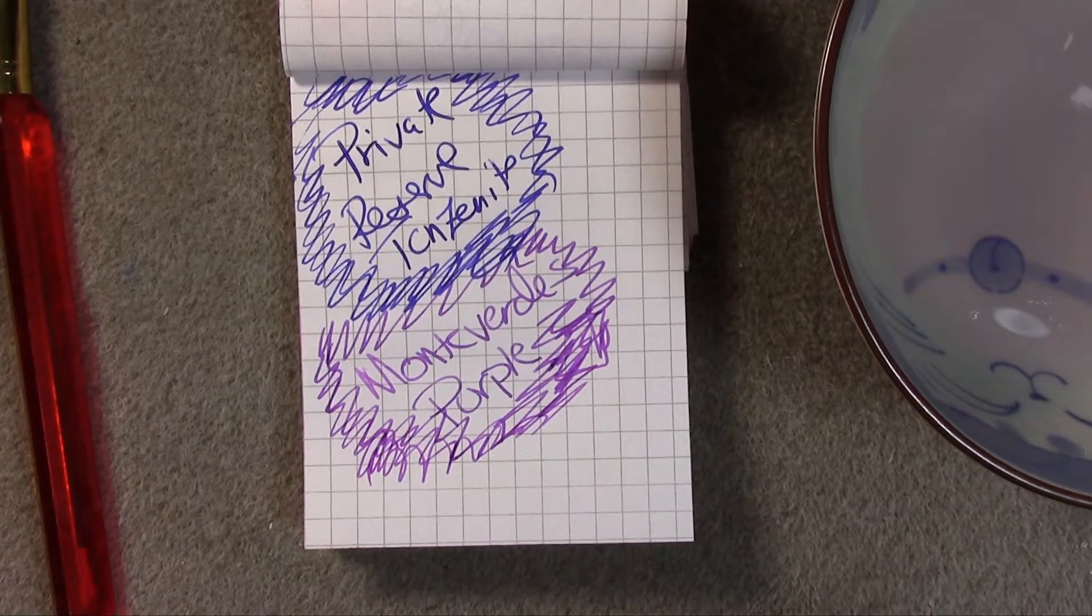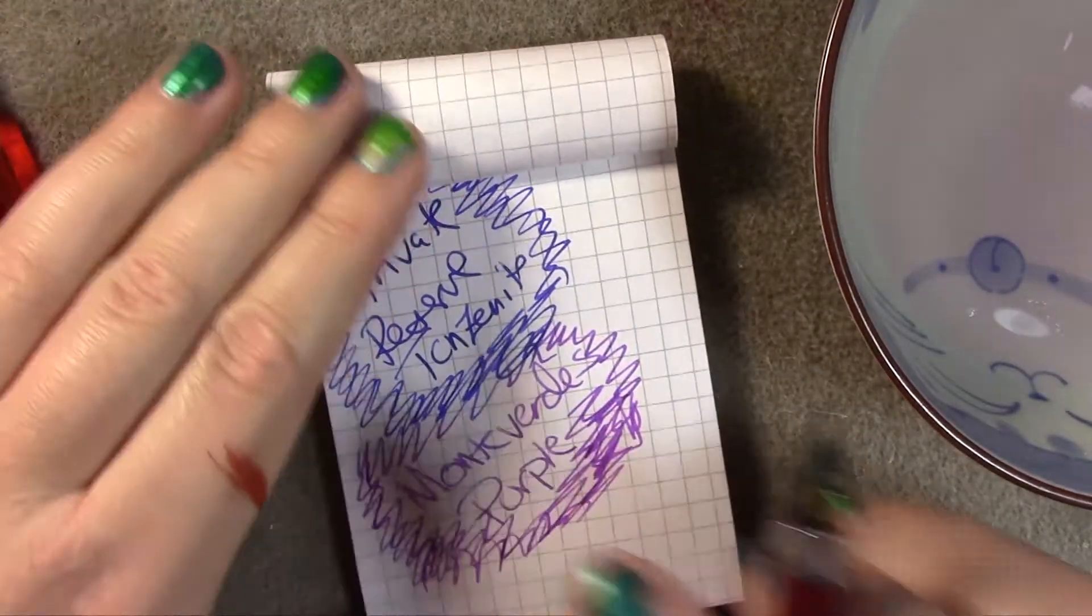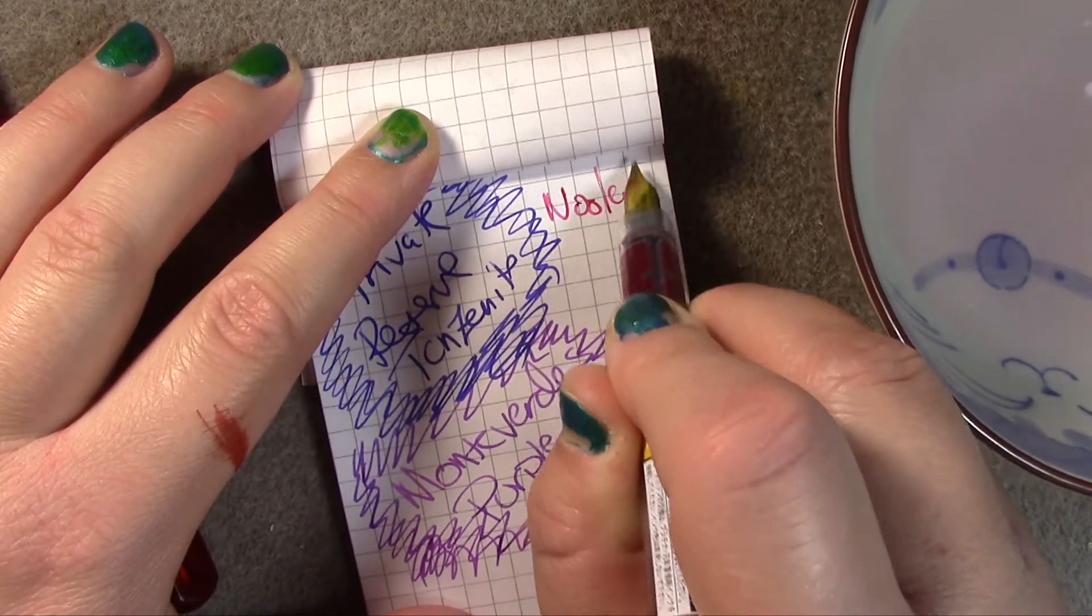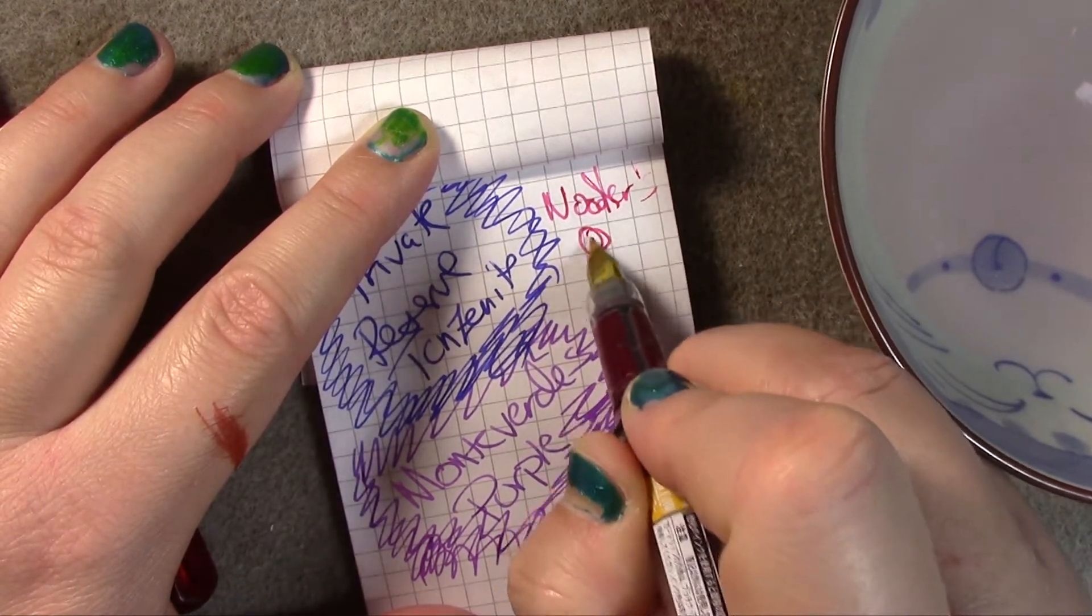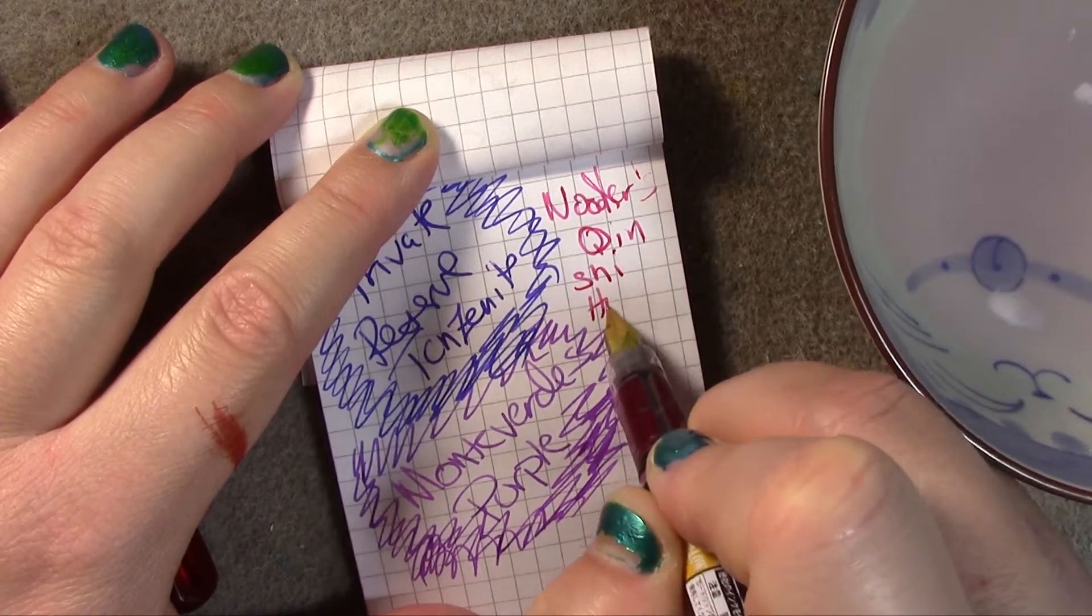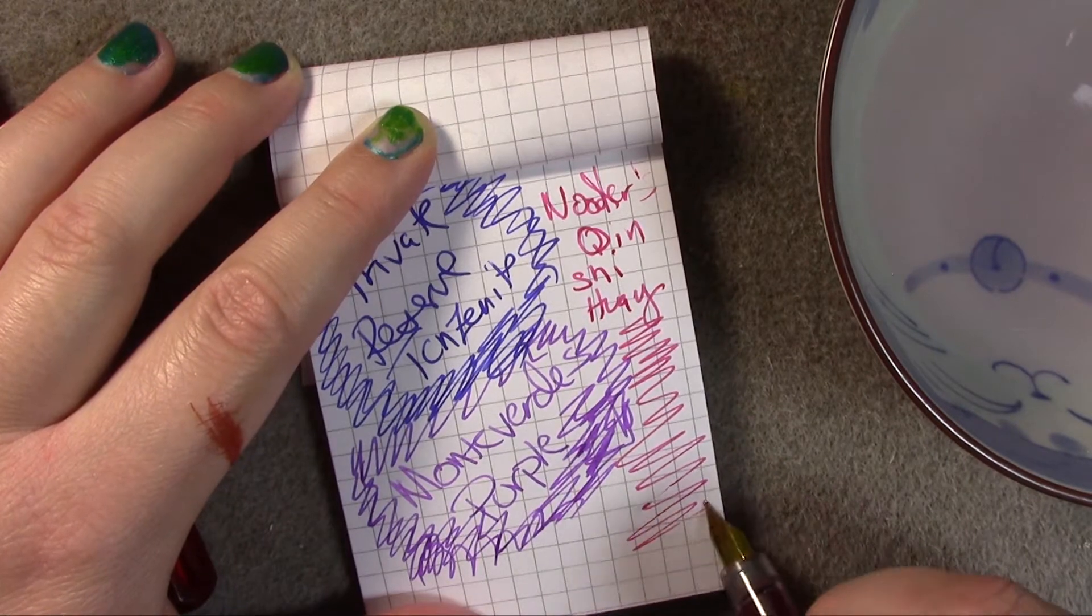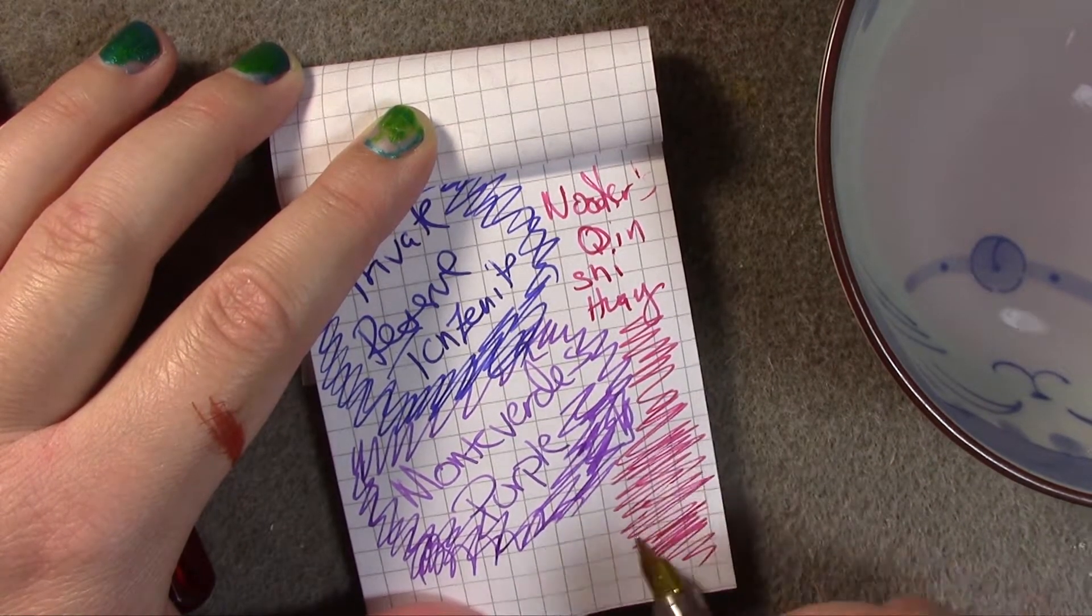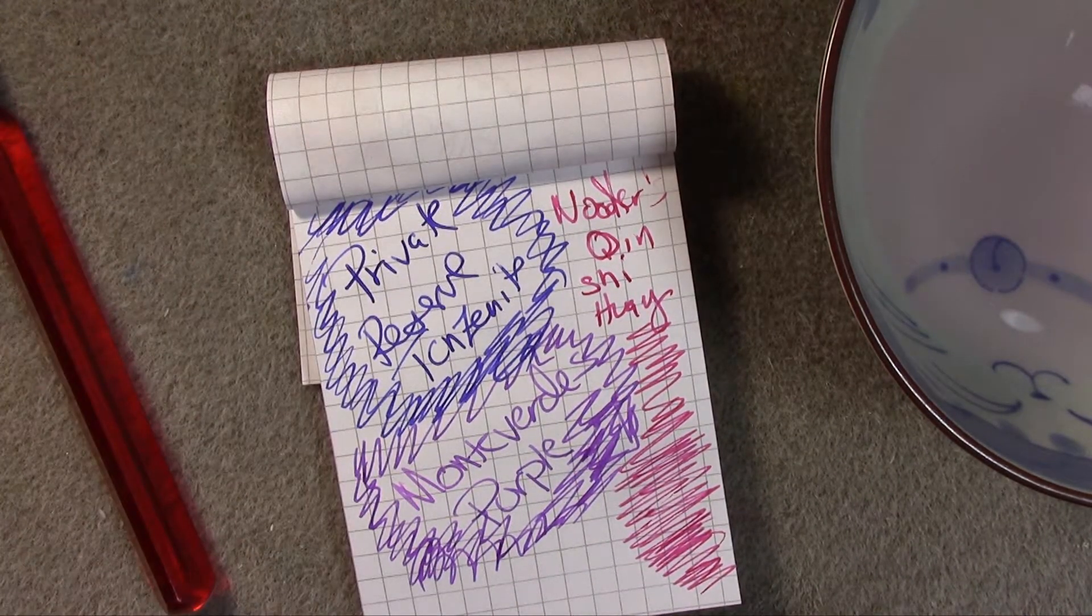And finally, Noodler's Kinshi Hong. And I'm probably botching that name up to no end. There's a D in there somewhere. It looks very red in the sample, but once you do it out through a pen, it's very pink and very vibrant, and I like it.